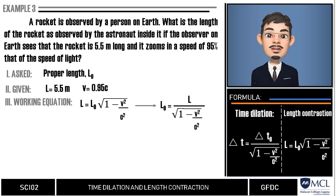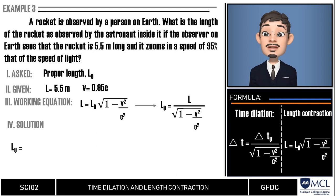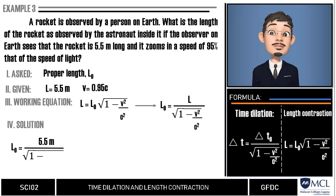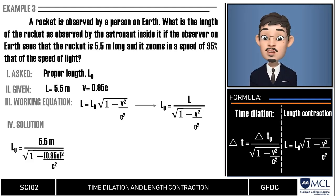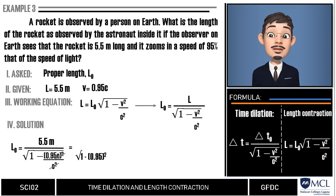We then substitute the given. Our relative length is 5.5 meters over square root of 1 minus 0.95c squared over c squared. We can cancel the c squared in numerator and denominator, but be careful that what remains is 0.95 squared and not 0.95 only. Our denominator will be square root of 1 minus 0.95 squared, which is equivalent to 0.31.